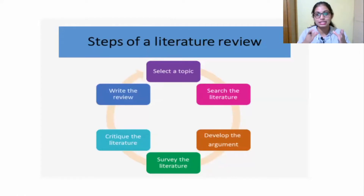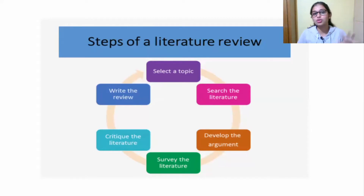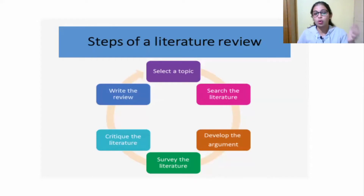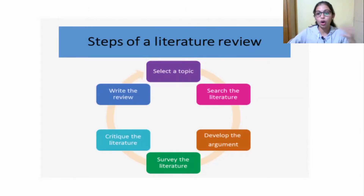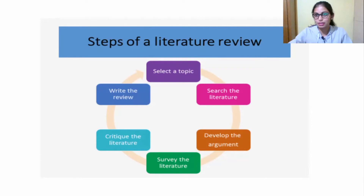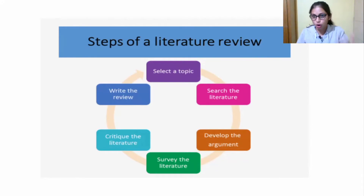Now let's look at the steps of a literature review. The first step is to select a topic. After selecting the topic, you have to search the literature — meaning, what are the previous studies done related to your topic. After that, you have to develop the argument: look at what results previous research obtained and what changes have happened.